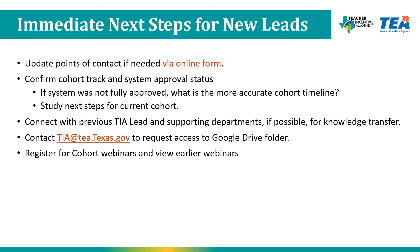If you're a new TIA lead, here are your immediate next steps. First, ensure that your points of contact are up to date by updating them via our online form — we require a primary point of contact and at least one secondary. If you're unsure who is currently listed, email us at tia.tea.texas.gov. Second, confirm your cohort track and system approval status. Then study the next steps for your most accurate current cohort. Connect with your previous TIA lead and any supporting departments to learn about your system and any prior stakeholder engagement. You can also contact our inbox to request access to our Google Drive folder for webinar session materials, and register for cohort webinars.